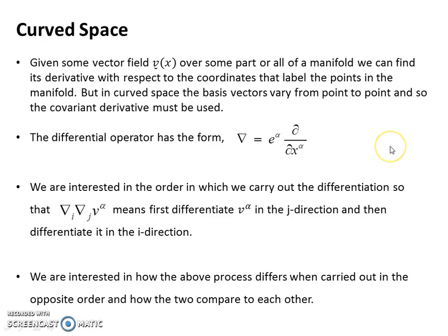In curved space though, we have something quite different. If we have a vector field over some manifold or some part of the manifold, the vector field might be related to the coordinates that label the points in the manifold. What we do know though, is that the basis vectors will vary from point to point, so they become significant in curved space, and we must use the covariant differentiation method.